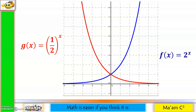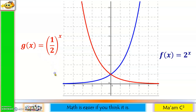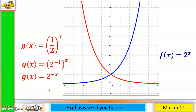Remember these two graphs from a previous video? The blue one is f of x equals 2 raised to x, while the red one is g of x equals 1 half raised to x. Focus your eyes on the red function. If I bring up my 2, this will become 2 raised to negative 1 times x. Simplifying this, it will become 2 raised to negative x.